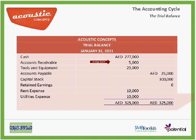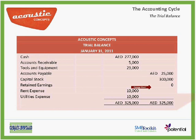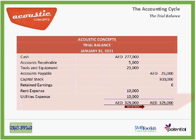We put all the accounts with debit balances together on one side of the trial balance, and all the accounts with credit balances on the other side of the trial balance. Once we sum them together, we should have equal balances on the debit and on the credit side.